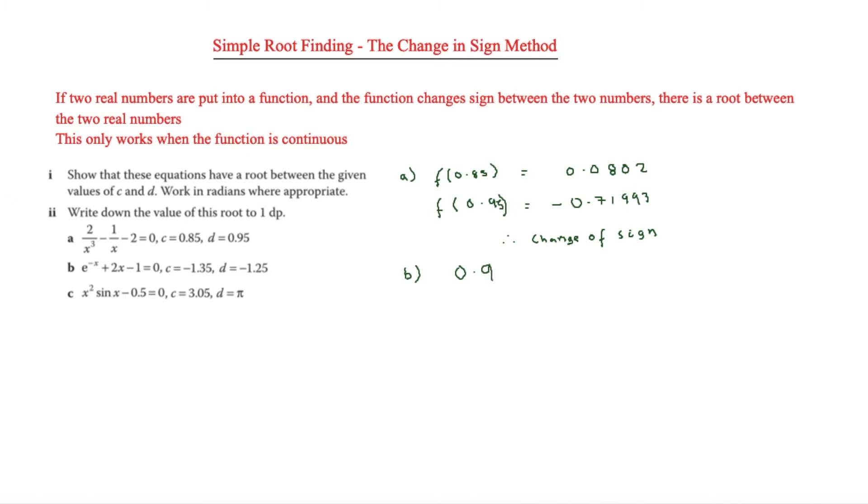In part 2, we have e to the minus x plus 2x minus 1 equals 0. Putting f of minus 1.35 in first, that means e to the 1.35 plus 2 times minus 1.35 minus 1, which equals 0.1574.